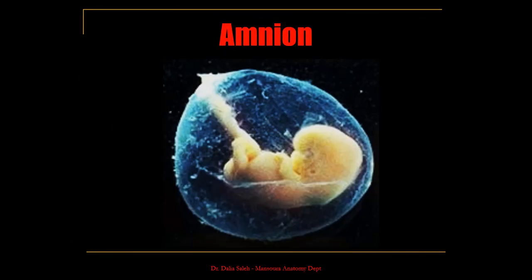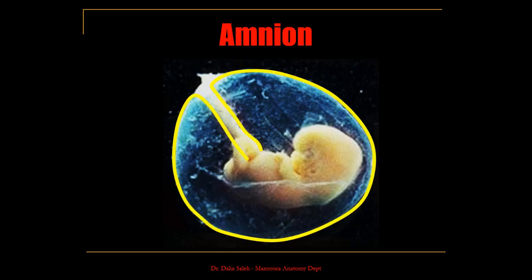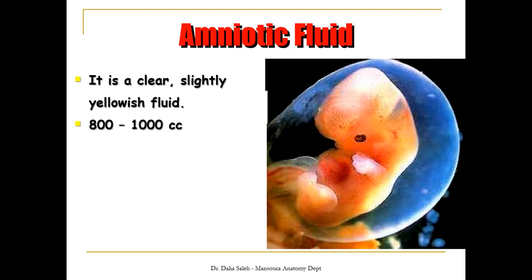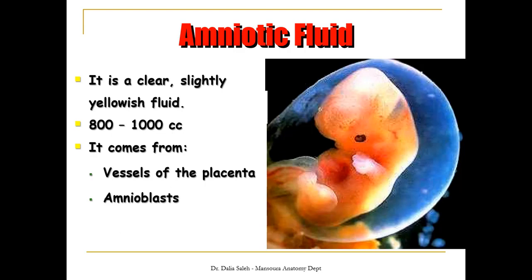The amnion is like a balloon made of transparent membrane filled with fluid that surrounds the embryo completely and also covers the umbilical cord, with the embryo suspended inside it. This fluid is called amniotic fluid. It is a clear, slightly yellowish fluid, about one liter. It comes from oozing of fluid from vessels of the placenta, as a secretion from the amnioblasts lining the amniotic cavity, and in the second half of pregnancy it is mainly made by fetal urine.